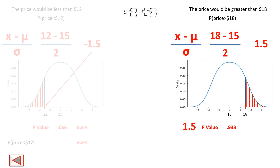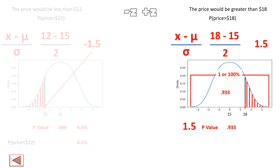Before proceeding, let me explain: the entire area under this curve is 1, or 100% — this is a fundamental property of the standard normal distribution. The value we found, 0.9332, represents the area to the left of the z-score. So 0.9332 is the area from the leftmost point up to z = 1.5 under the curve.